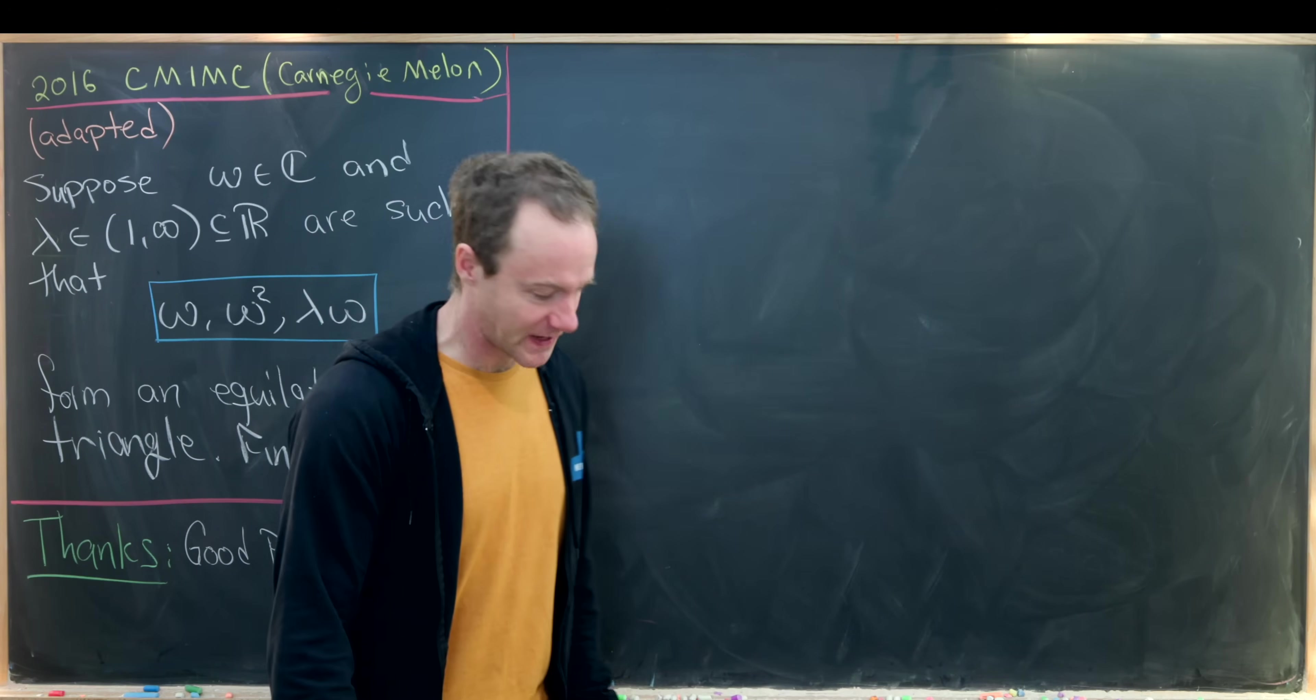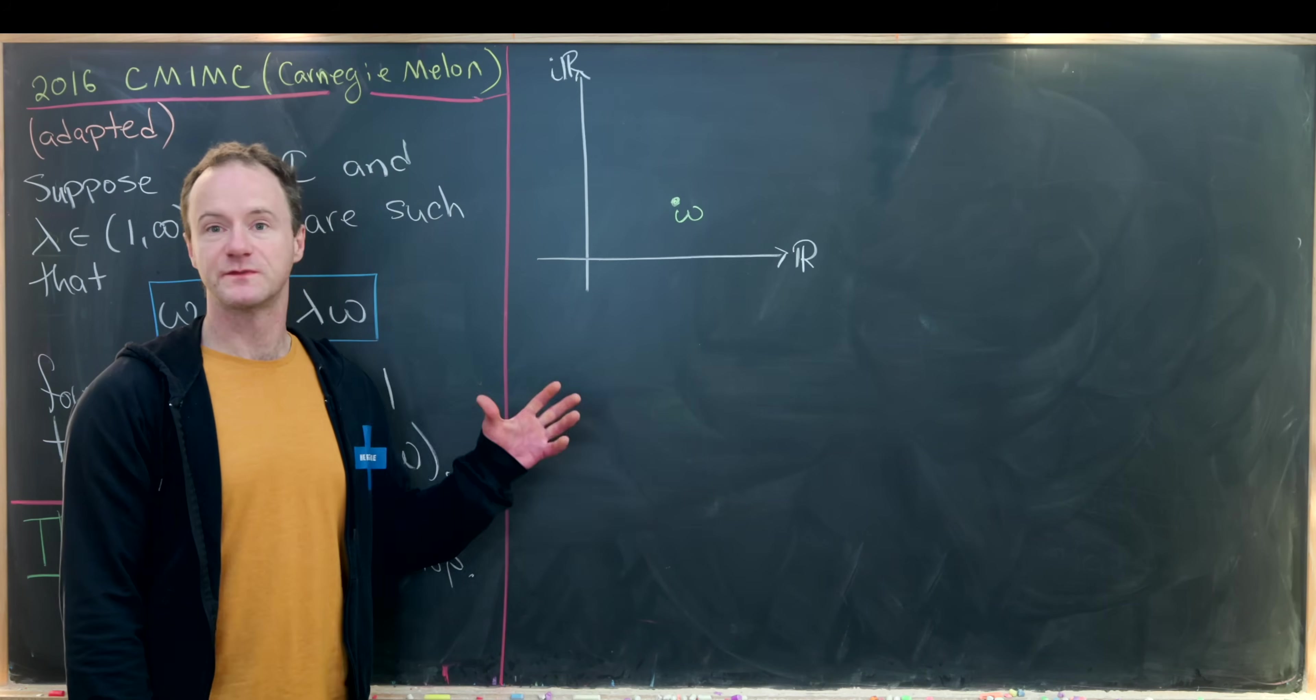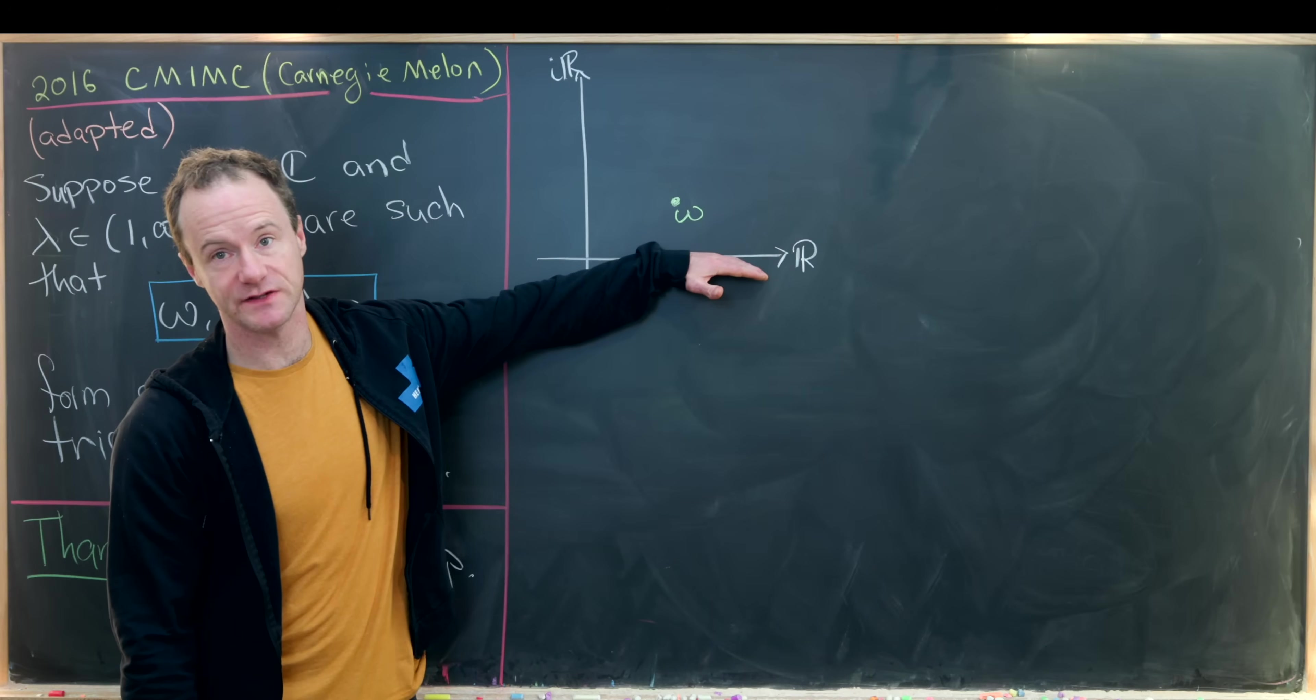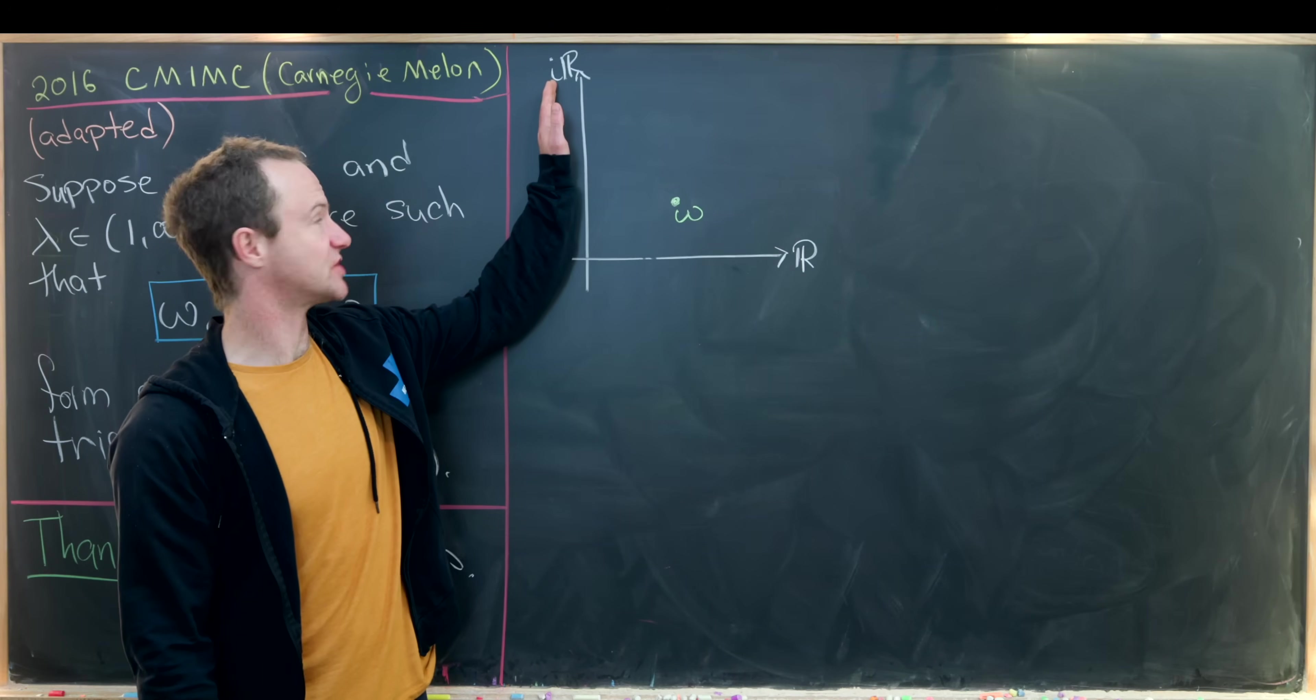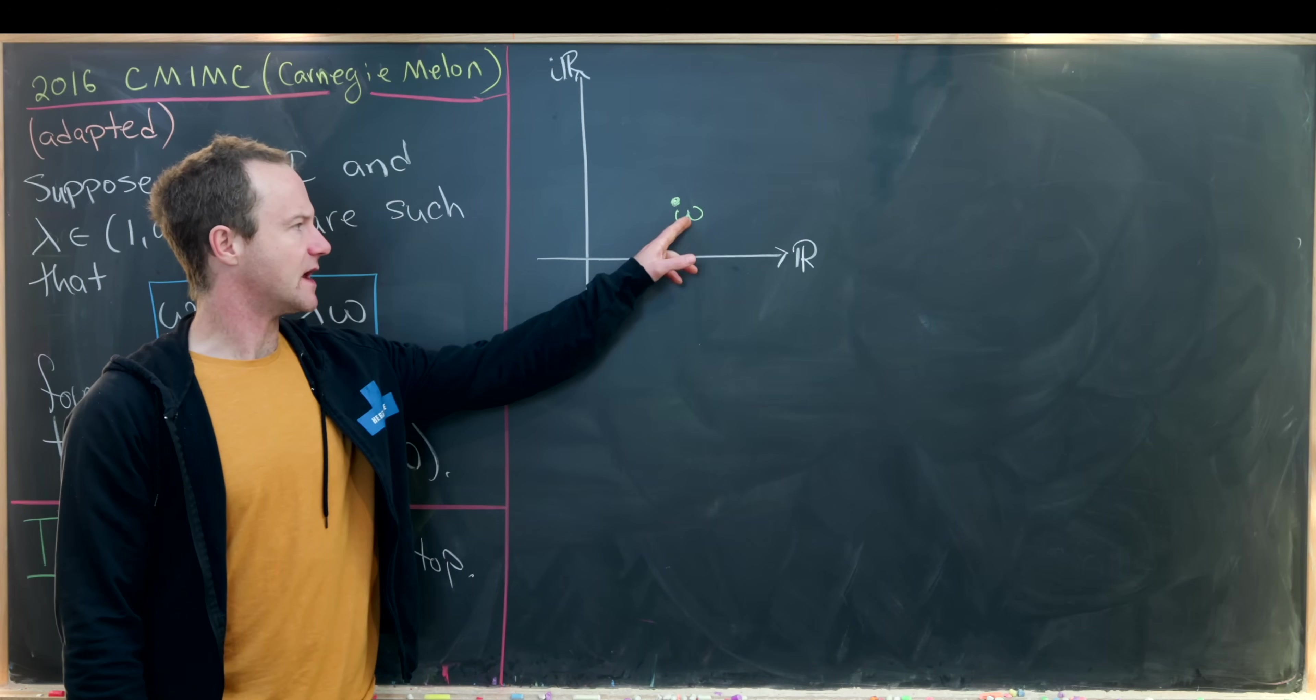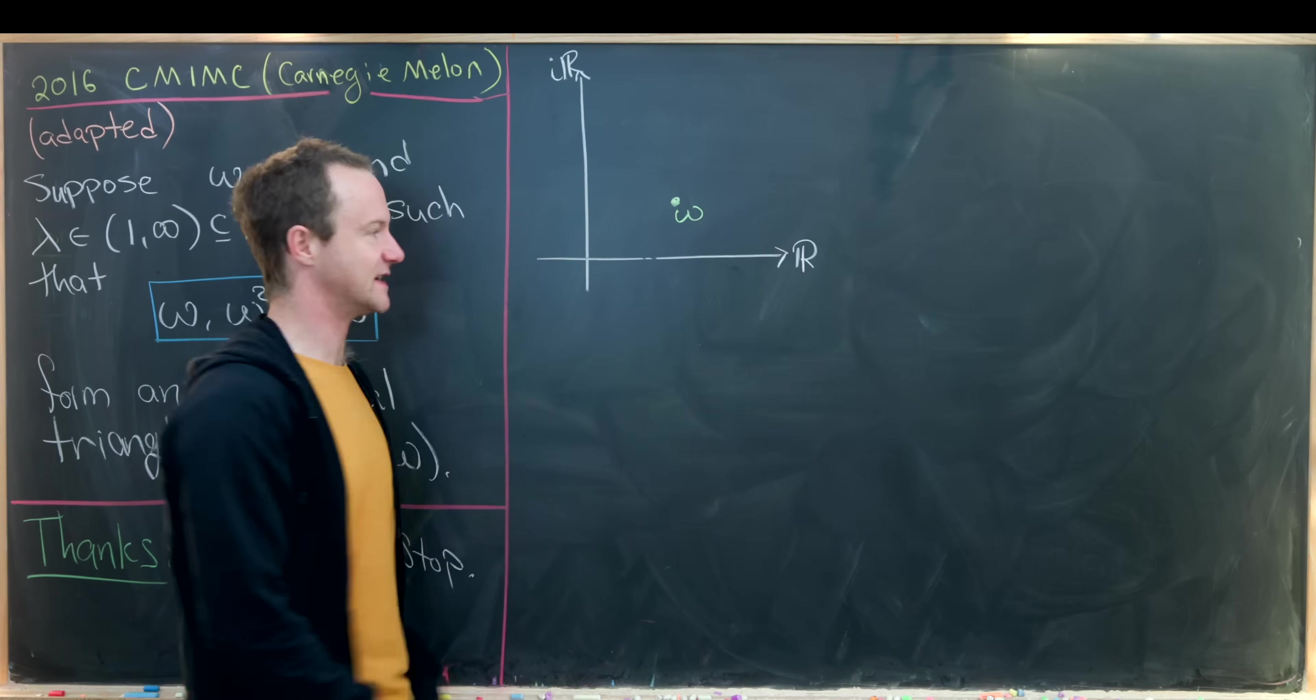So let's maybe get a picture of this situation on the board, and then we'll go from there. So I've started our picture. I've got my complex plane. The real axis is running horizontally, and the imaginary axis is running vertically. So I've put my complex number omega in the first quadrant, but this could be generalized to any quadrant.